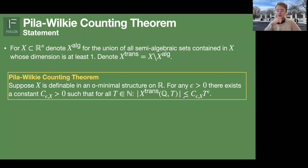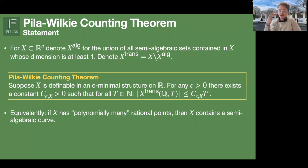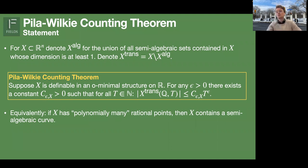Usually in applications, people use the contrapositive: if I found polynomially many rational points on the transcendental part, then by this theorem there must be some semi-algebraic set contained in X. If there are too many rational points, that means we have not excluded some semi-algebraic sets. The reason for excluding the algebraic part is that semi-algebraic curves already contain on the order of T^{1/2} rational points of height at most T, so they naturally contain polynomially many.